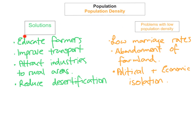Solutions for Mali include: educating and training farmers to manage farms more effectively; improving transport links between rural and urban areas to make rural areas more attractive for investment and to attract industries, creating jobs and economic growth; and reducing desertification by planting trees in belts and addressing problems of overgrazing and overcropping to stop land turning into desert.